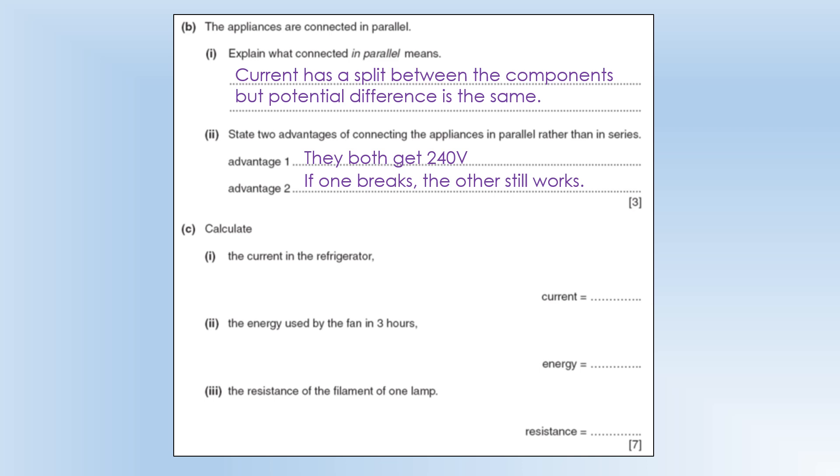Calculate the current in the refrigerator. I'm going to use P equals IV. We know the power. We know the potential difference. So that gives us the current. The energy used by the fan in three hours. We need to multiply the power of the fan by the time in seconds to give us the energy. And then to get the resistance of the filament of one lamp. First I'm going to calculate what the current is using the power and the potential difference. Then I'm just going to use the resistance equation to calculate the resistance is 960. And that completes this set of questions.